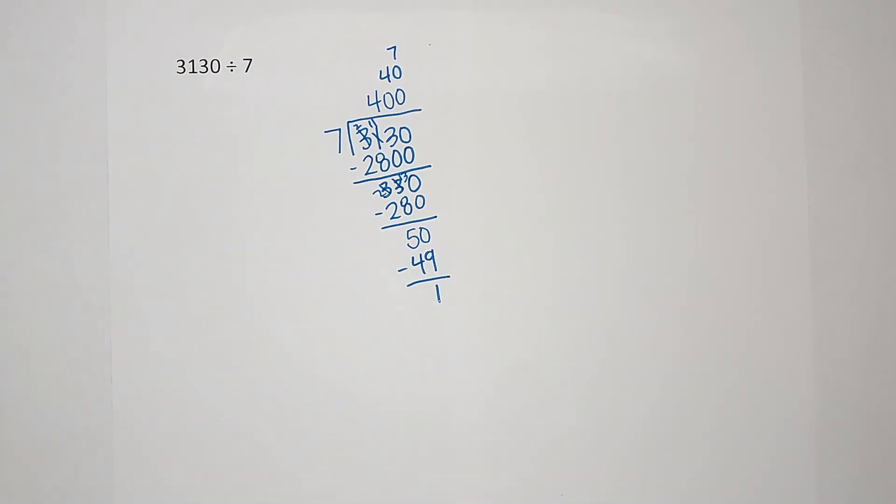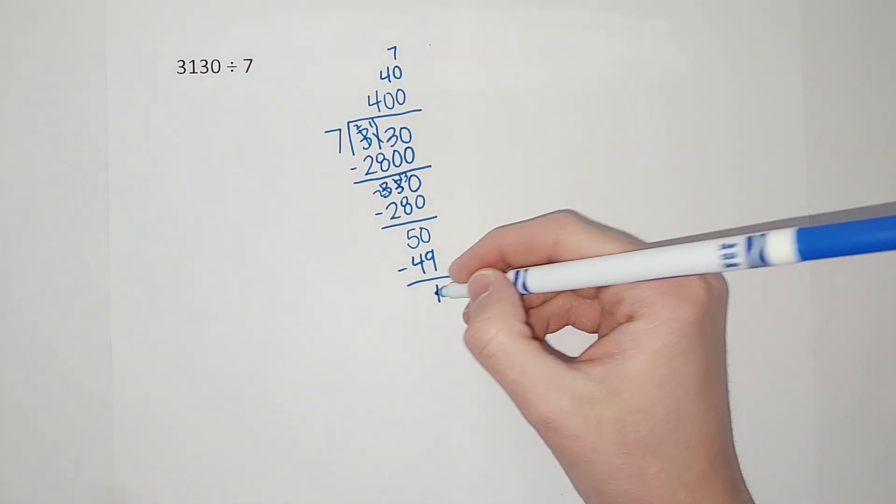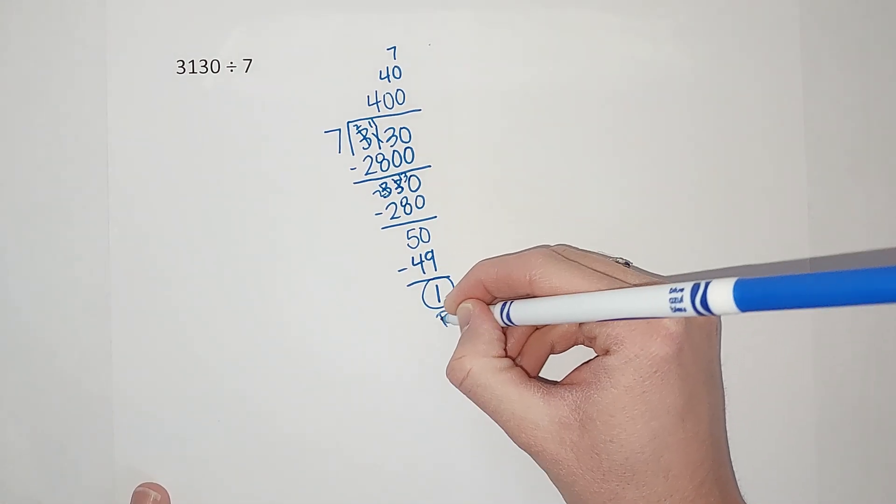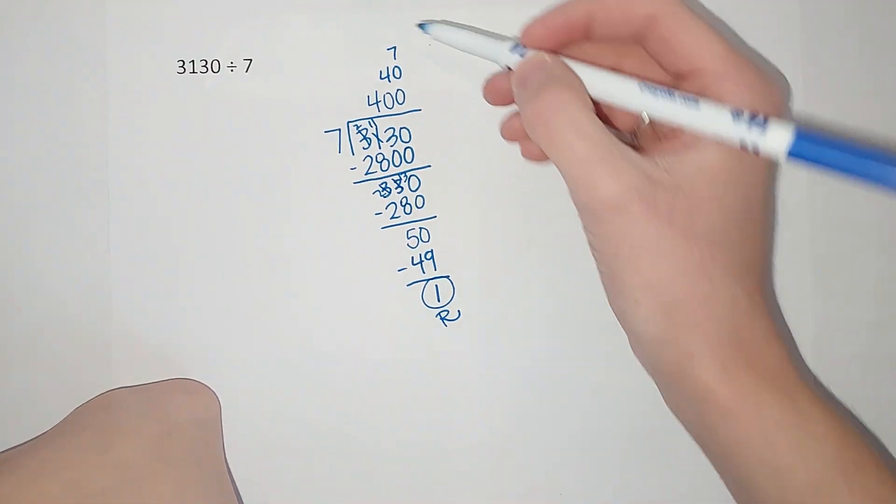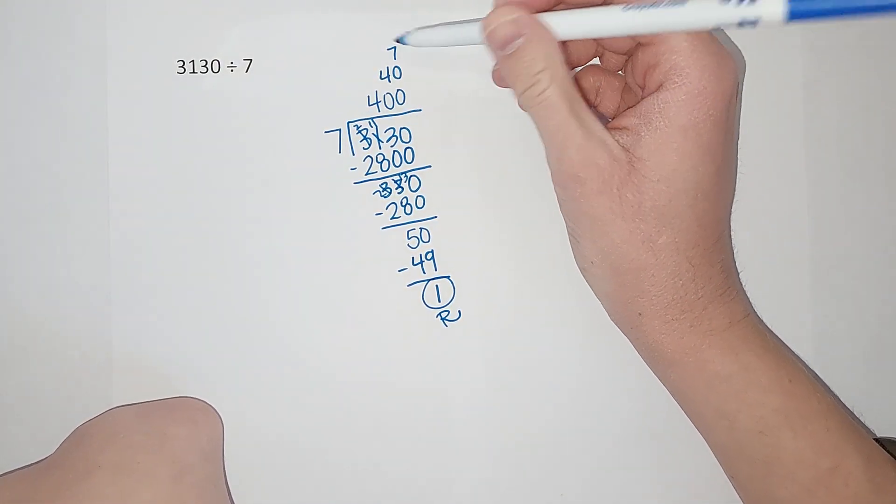And I'm gonna be left with one. Now, in the terms we're speaking, seven, we are not going to divide into one, right? So I'm done. This is my remainder, and this up here is my answer.